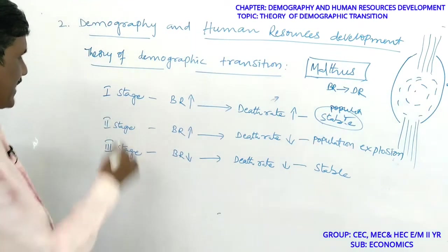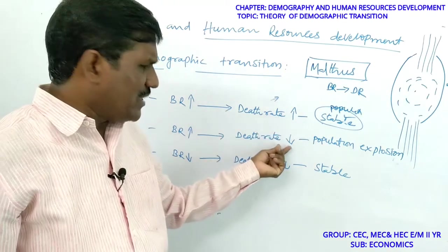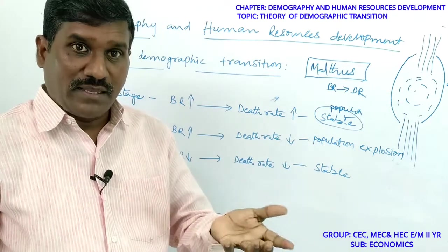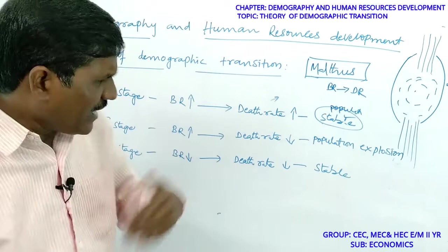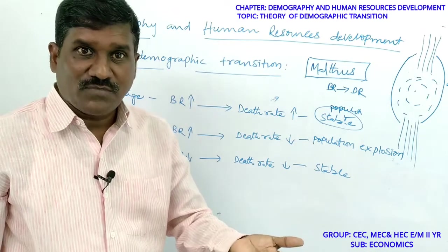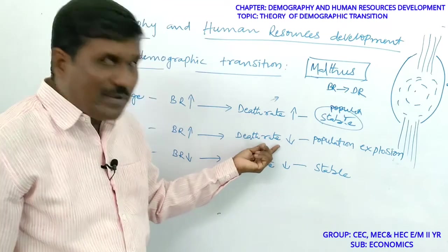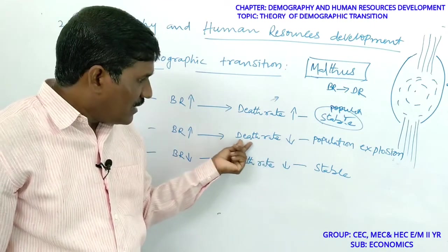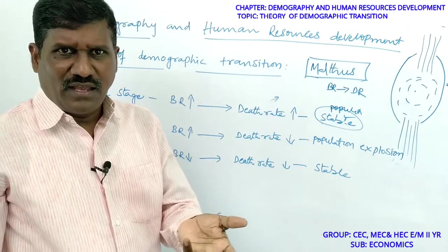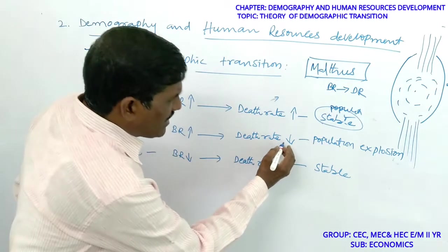In the second stage, death rate rapidly declines. Why? Because people become educated, medical facilities expand, health facilities expand, income of people increases, and vaccines for epidemics like cholera and smallpox become available. Due to all these factors, death rate rapidly declines.